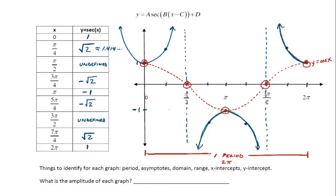The last question is about amplitude. The book defines amplitude as undefined for these functions because technically the function doesn't reach a maximum or minimum — secant, cosecant, tangent, and cotangent all increase and decrease without bound. That number out front still affects the shape of the graph, but we don't specifically call it amplitude since these functions are unbounded. That's an introduction to the shape of all four of those graphs.